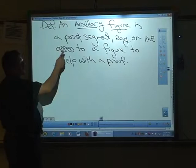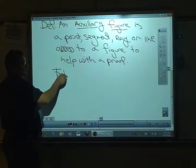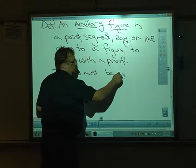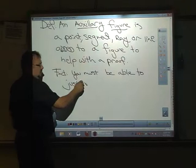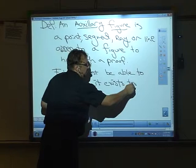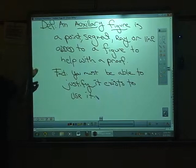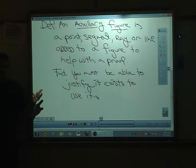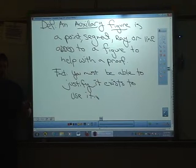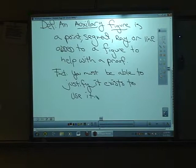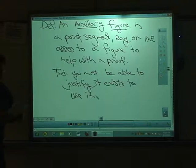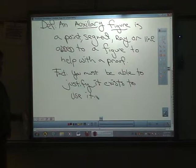Most important thing about an auxiliary figure is this. You must be able to justify it exists to use it. I can't just say, oh, I'm going to put a point over here. I have to be able to say, oh, well, these two lines intersect at a point. Why? Is there a definition? Is there a postulate? Is there a theorem? I can't say, oh, I'm just going to draw an angle. I need to be able to say, oh, protractor postulate says I can measure an angle so I can draw an angle. You have to be able to justify it exists, otherwise you can't use it. So how are we going to use it for this proof? Let me show you.